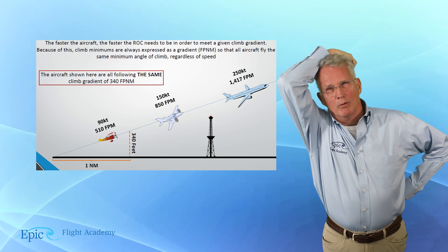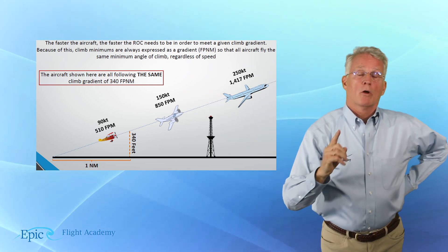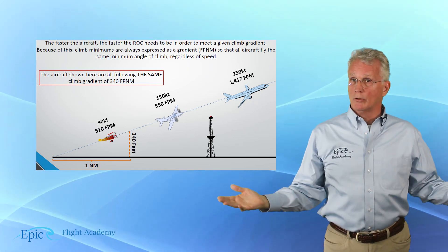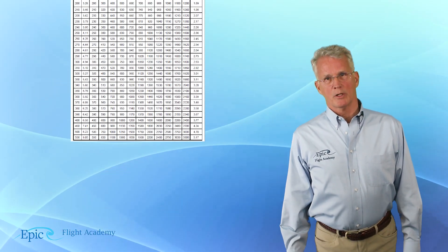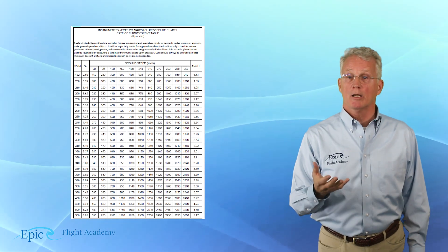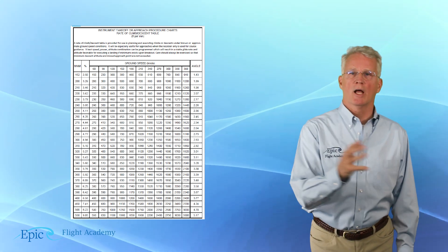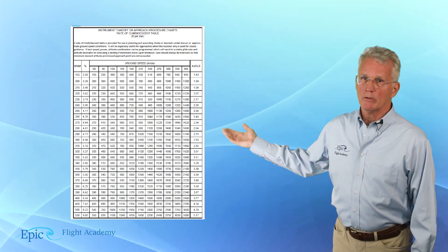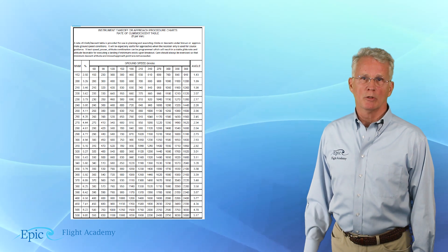Where do we find that information? We are going to go to the TPP — what pilots call TERPS for short. The back cover or last page of the TPP contains climb and descent tables that make this conversion very easy. Here's a graphic of what the last page of that TERPS looks like.